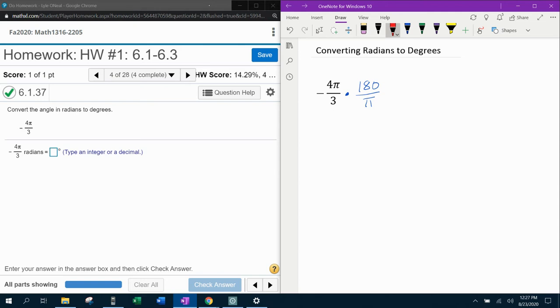And I want you to notice that the pi's are going to cancel. Pi over pi cancels. And then we can simplify before we multiply.